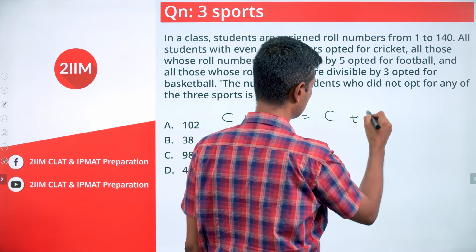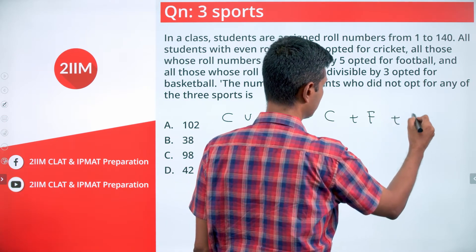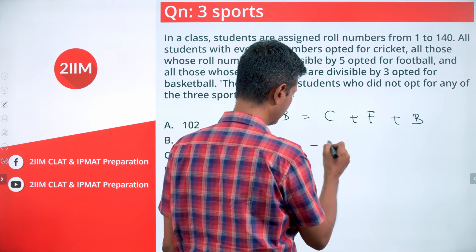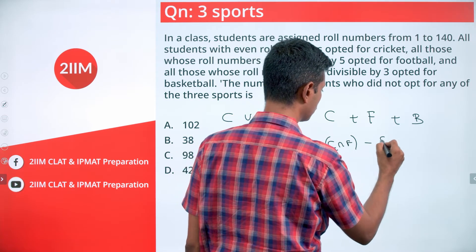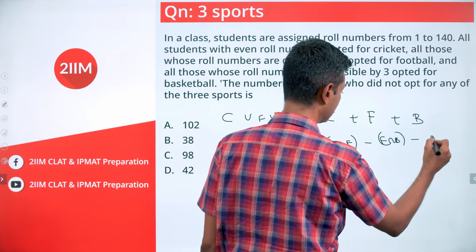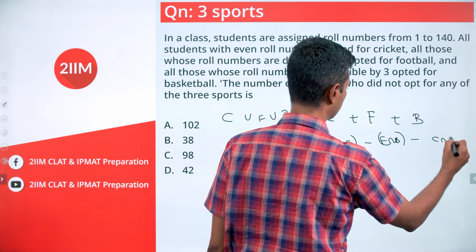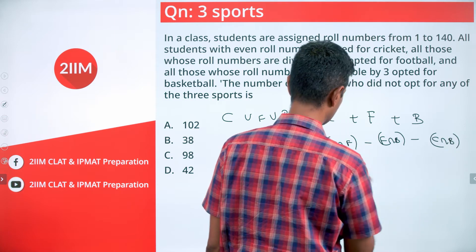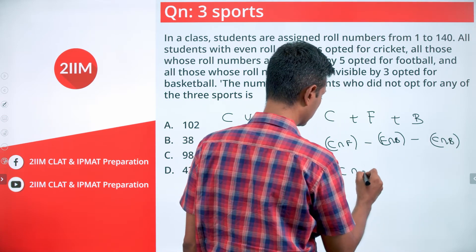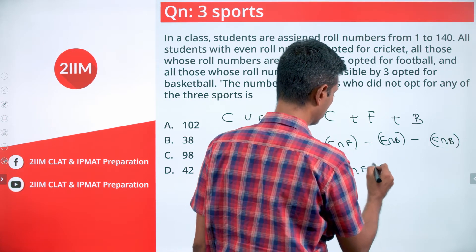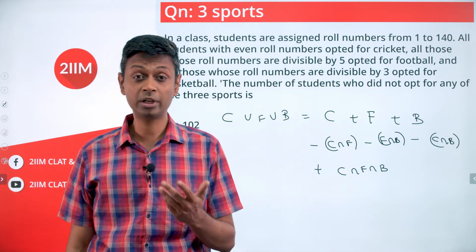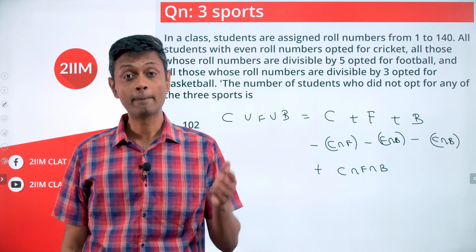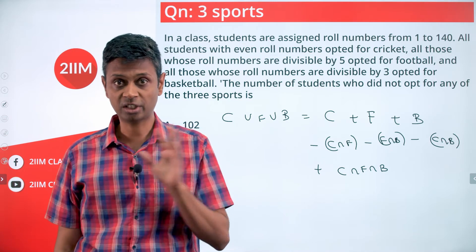Cricket union football union basketball equals the number playing cricket plus football plus basketball, minus cricket intersection football, minus football intersection basketball, minus cricket intersection basketball, plus cricket intersection football intersection basketball. That's the formula: A∪B∪C = A + B + C - A∩B - B∩C - C∩A + A∩B∩C.